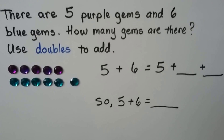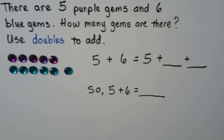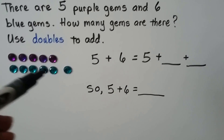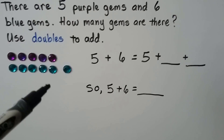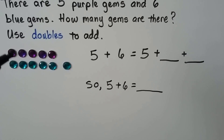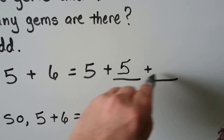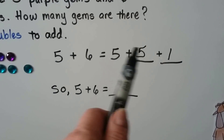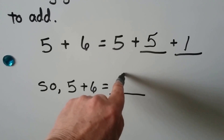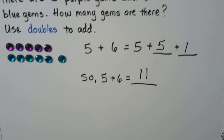There are 5 purple gems and 6 blue gems. How many gems are there? Use doubles to add. If we break the 6 into 5 and 1 more, we can add 5 plus 5 plus 1. So 5 plus 6 equals 5 plus 5 plus 1 more. If we know 5 plus 5 is equal to 10, 1 more would be 11. So 5 plus 6 is equal to 11.